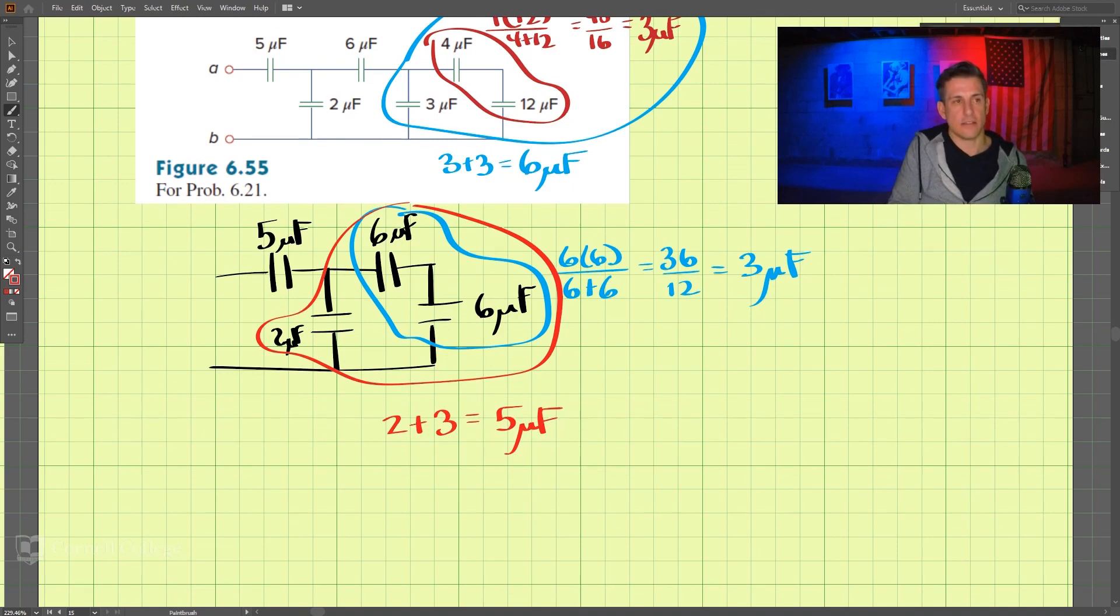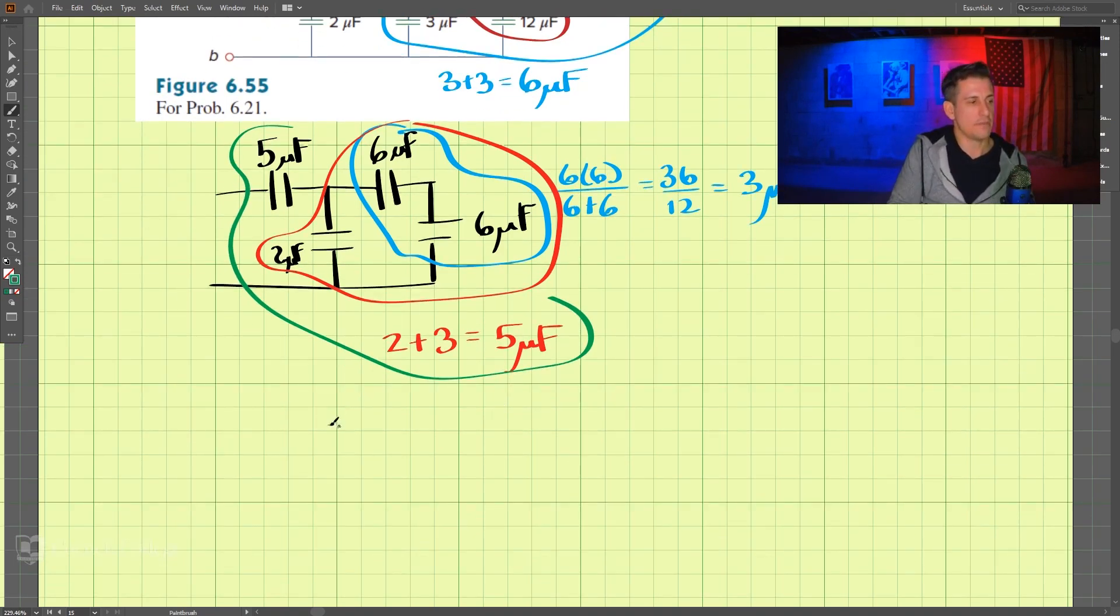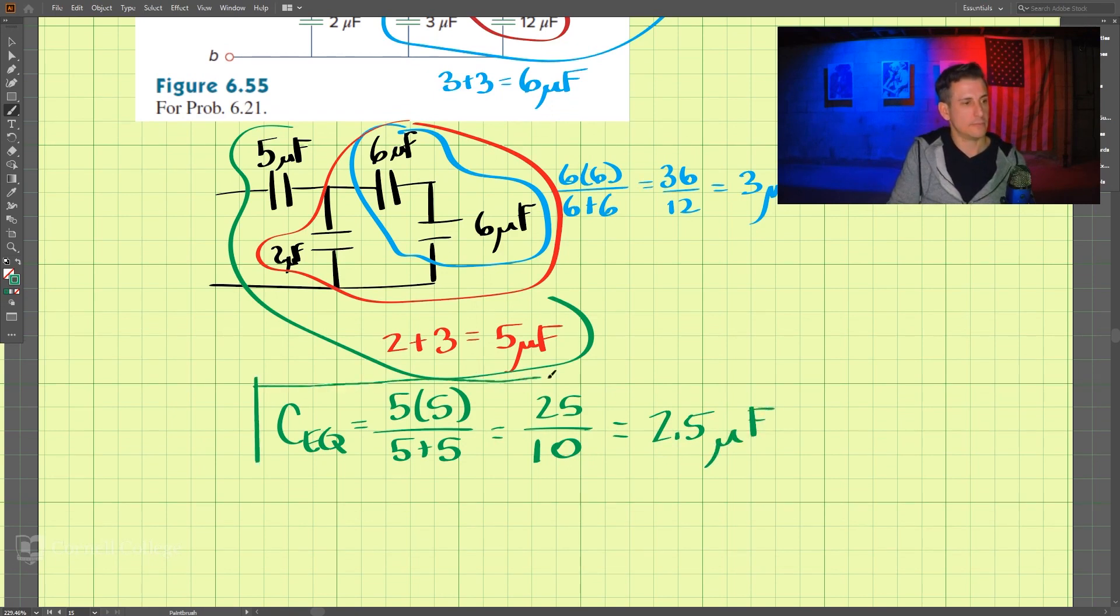And then lastly, we have our 5 microfarads in series with this 5 microfarads. So, that comes out to be, our equivalent capacitance is equal to 5 times 5 over 5 plus 5, which is 25 divided by 10. And that comes out to be 2.5 microfarads. And that is our answer for problem 621.